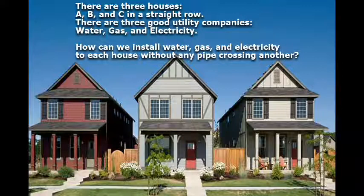How can we install water, gas, and electricity to each house without any pipe crossing another?